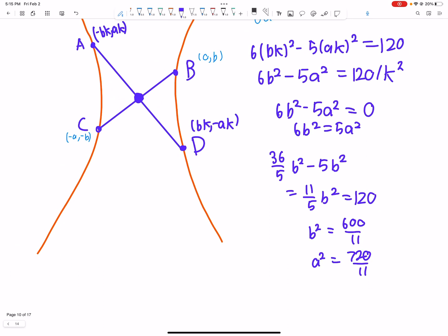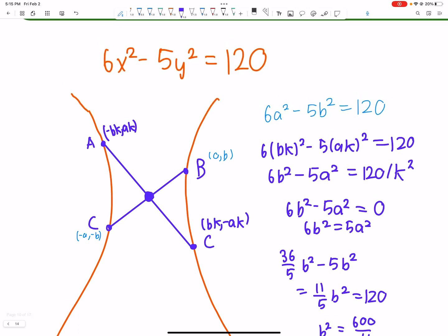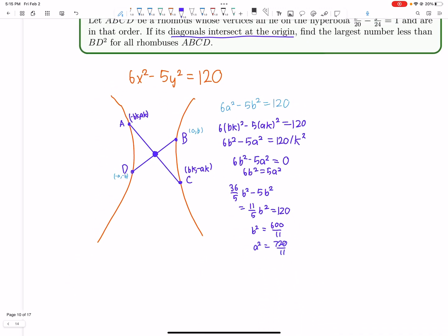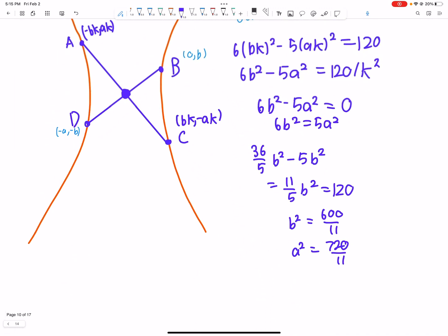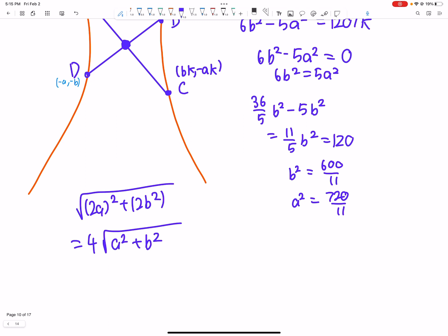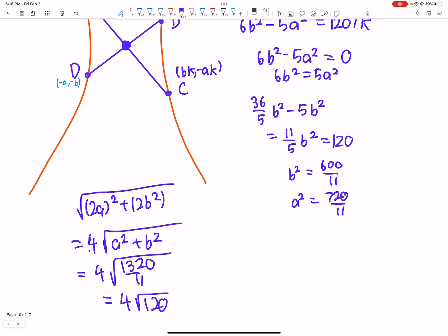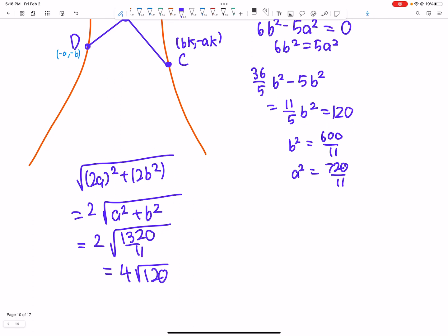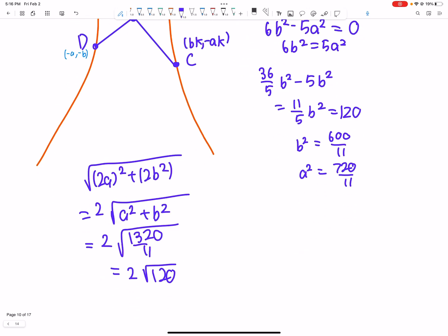Since B is at (a,b) and D at (-a,-b), BD = 2√(a² + b²) = 2√(1320/11) = 2√120. Therefore BD² = 4·120 = 480. So 480 is our answer.